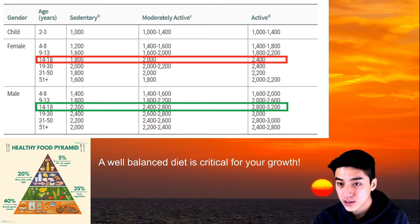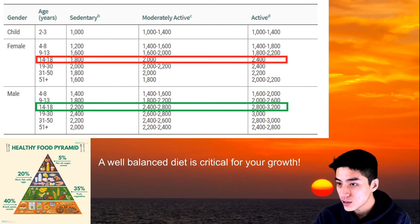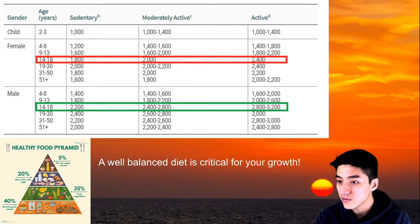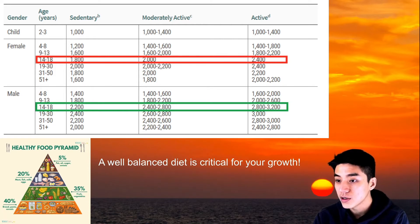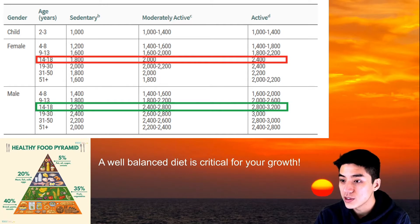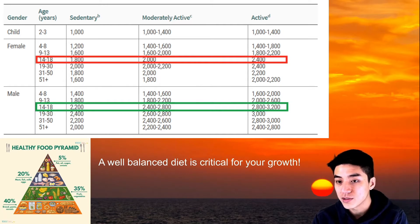For boys, it's a little bit more. So if you play a sport like rugby, football, or basketball, you're going to need anywhere between 2,800 to 3,200 calories per day.